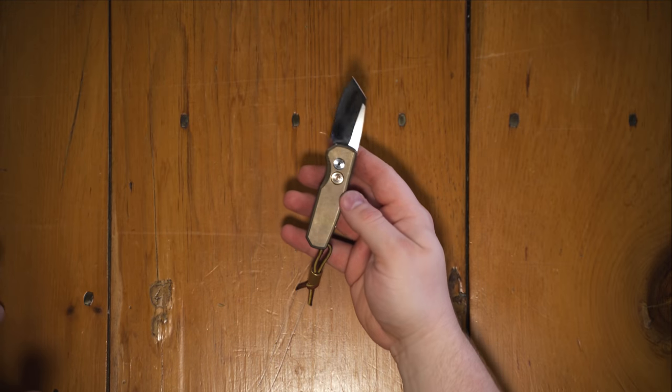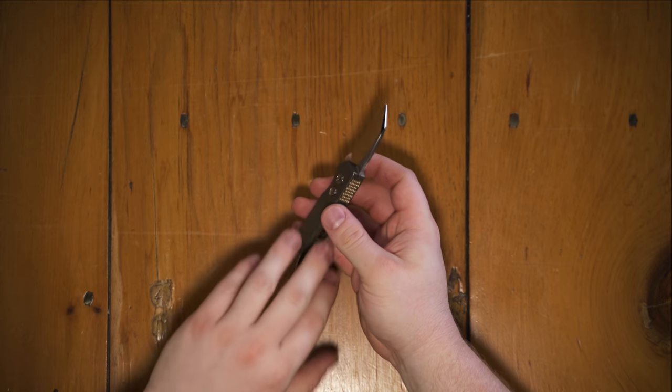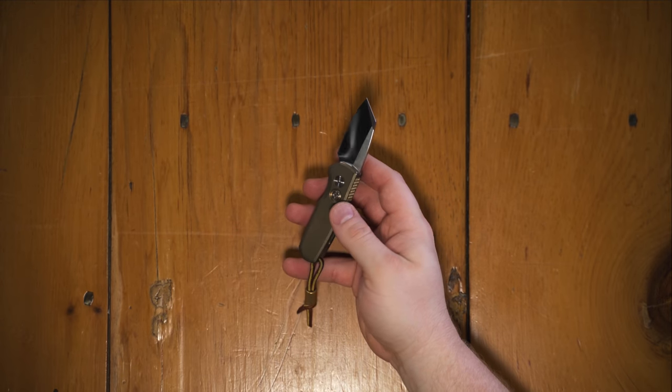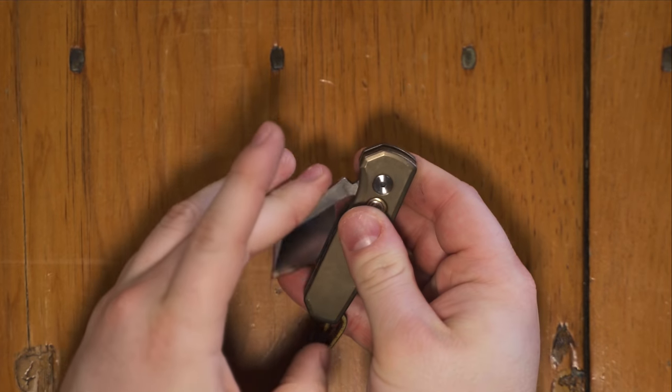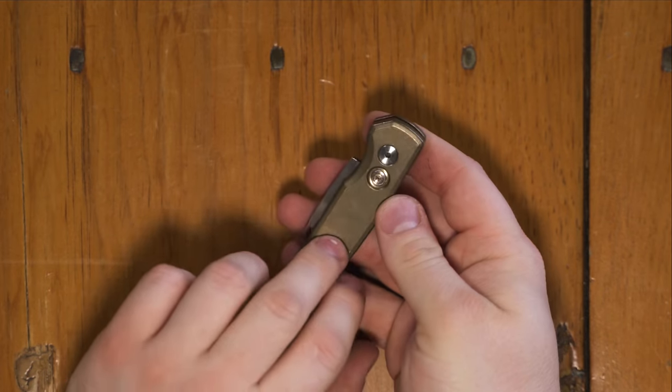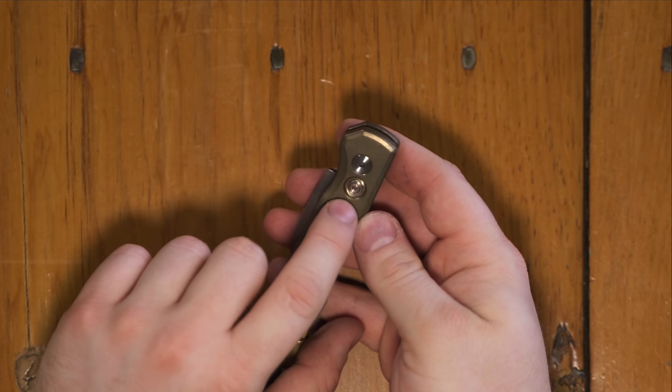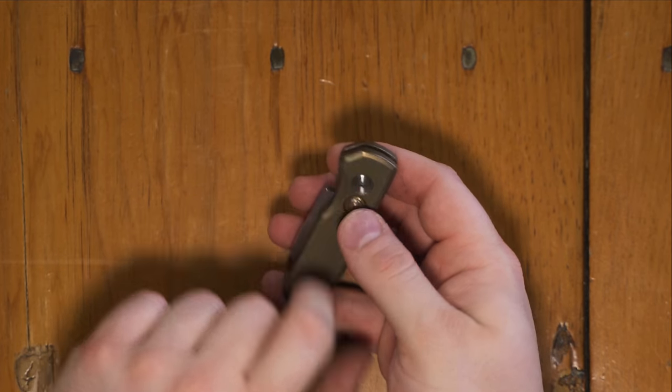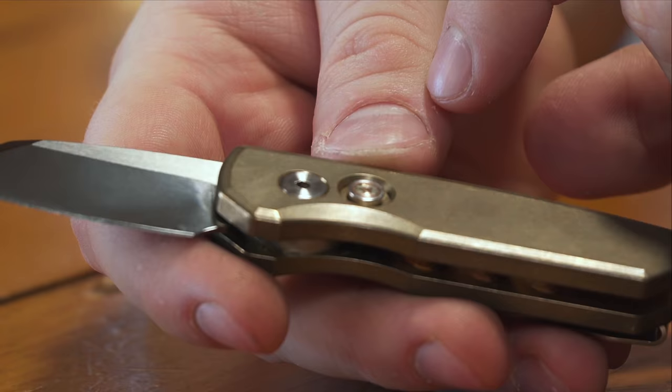Now this particular version, because it is a semi-custom is kind of pricey. This version is $350. So this version specifically is gone. You can't get them anymore. But the Runt 5 itself is coming out in different versions all the time. And they're, I think, closer to $150. They're under $200 for the different versions of that. But they have aluminum scales and different patterns and stuff. And some of them have really cool buttons.